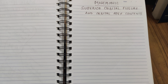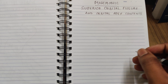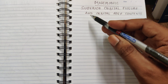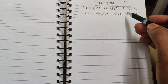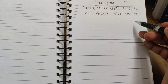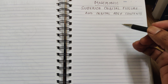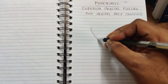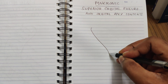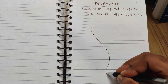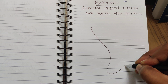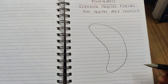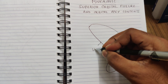Hello everyone, today I am going to teach you the mnemonic for superior orbital fissure and orbital apex contents. The orbital apex is formed by the greater wing of sphenoid laterally and the lesser wing of sphenoid medially.